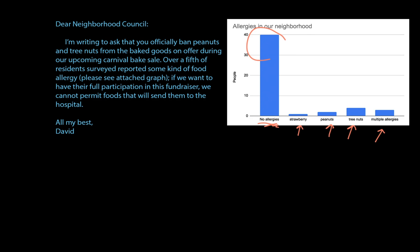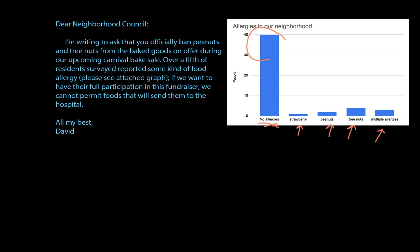To put it another way, here's a pie chart of that same data set showing just how many people in the neighborhood have allergies in total — it's just a different way of looking at it. We can see that the percentage of people surveyed who have allergies adds up to 20% of the total. Something that's in the letter but not the graphs is the idea that these are very serious allergies — if the wrong person ate a peanut, they could have a medical emergency. If the council were to look at just the graph alone, they might say, 'eh, it's not that many people, peanuts are great, let's include them.' But combined with the text, the stakes become more clear, and they may better understand the consequences of having nuts at the bake sale.